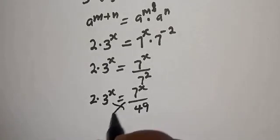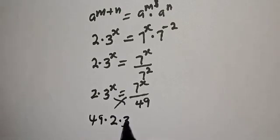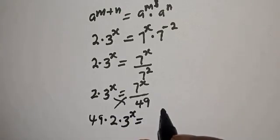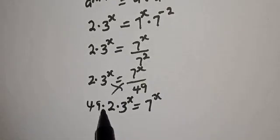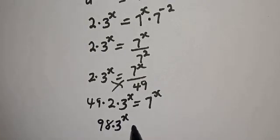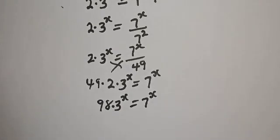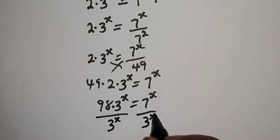Let's cross multiply. We have 49 multiplied by 2 multiplied by 3 raised to power s is equal to 7 raised to power s. 49 times 2 is 98, so 98 multiplied by 3 raised to power s is equal to 7 raised to power s. Let's divide both sides by 3 raised to power s.